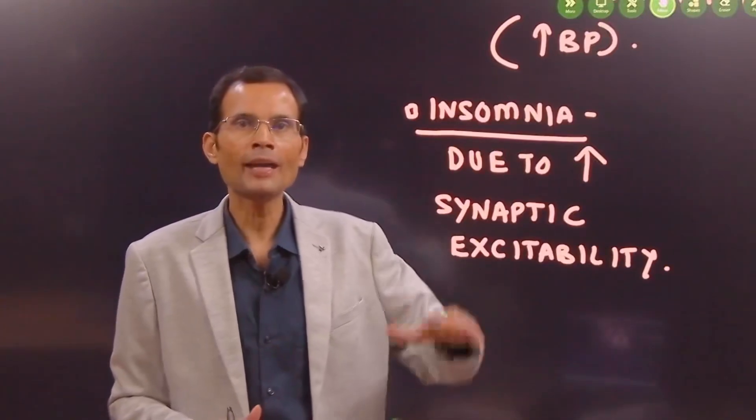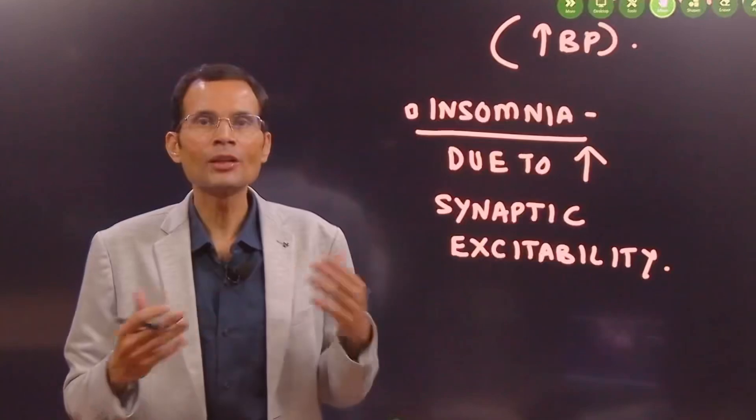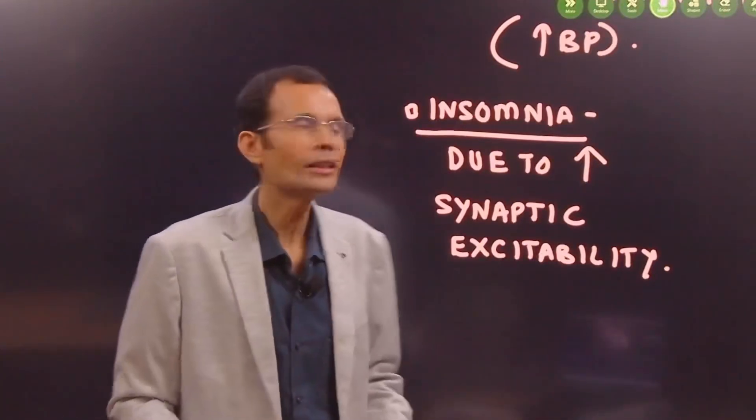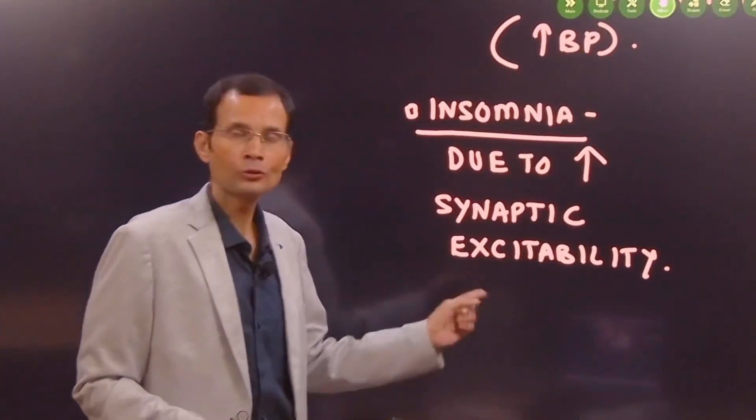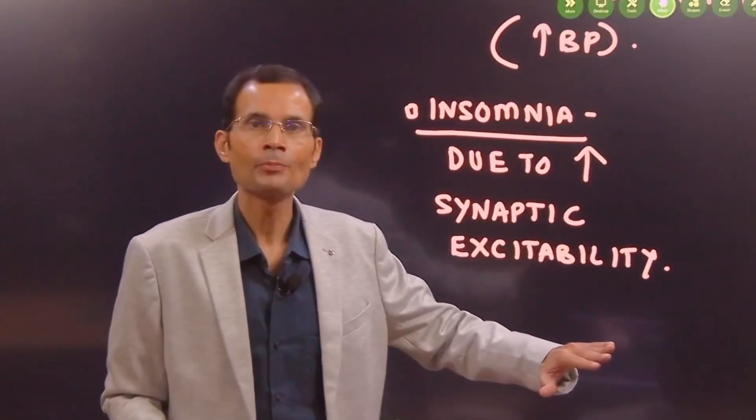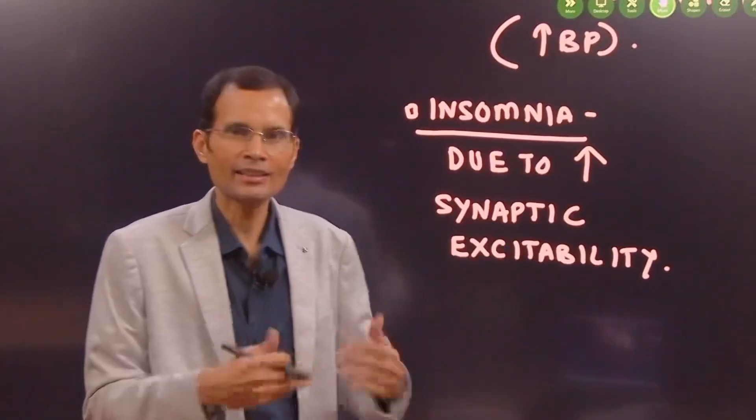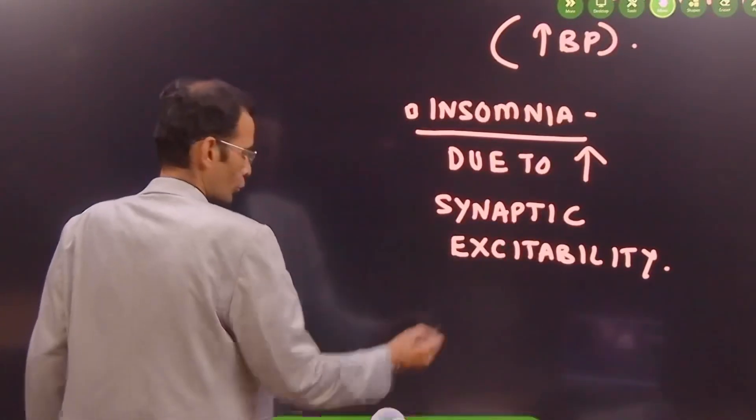You know this physiologically, cortical neuronal activity has to decrease if you want to fall asleep. So, if the neurons are firing excessively, it will result in the insomnia. On the other hand, hypothyroidism results in decreased neuronal and synaptic excitability resulting in excessive sleepiness.